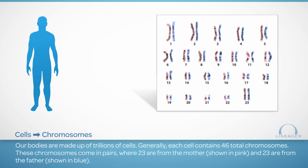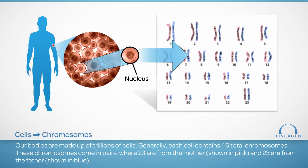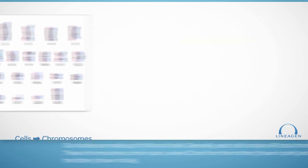Our bodies are made up of trillions of cells. Generally, each cell contains 46 total chromosomes. These chromosomes come in pairs, where 23 are from the mother and 23 are from the father. In this picture, called a karyogram, we have colored one of each pair pink and the other blue to help show that one of each pair comes from each parent.